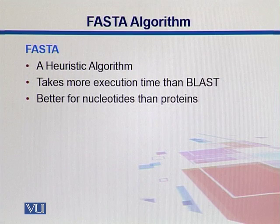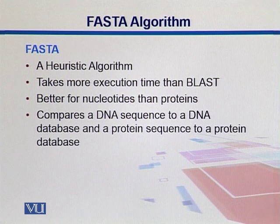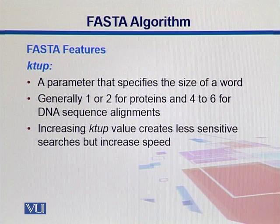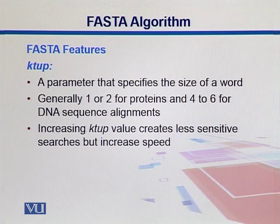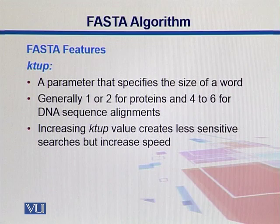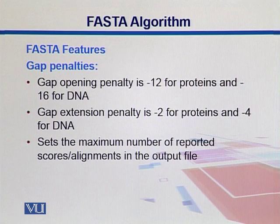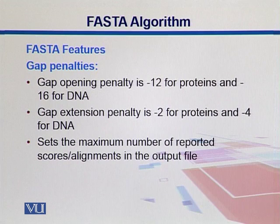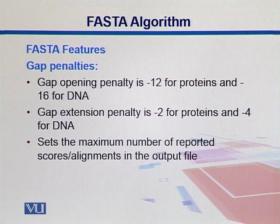FASTA is better for nucleotides than for proteins. It compares DNA to DNA and protein to protein. FASTA has some specific parameters. It uses K tuples — small size segments. It takes your sequence and breaks it into short fragments, then looks for similarities within the database. K tuple size is generally one or two for proteins, and four to six for DNA sequence alignments. Increasing the K tuple value creates less sensitive searches but allows more speed. Gap opening penalty is minus 12 for proteins and minus 16 for DNA. Extension penalty is generally minus 2 for proteins and minus 4 for DNA. It also sets the maximum number of reported scores or alignments in the output files.